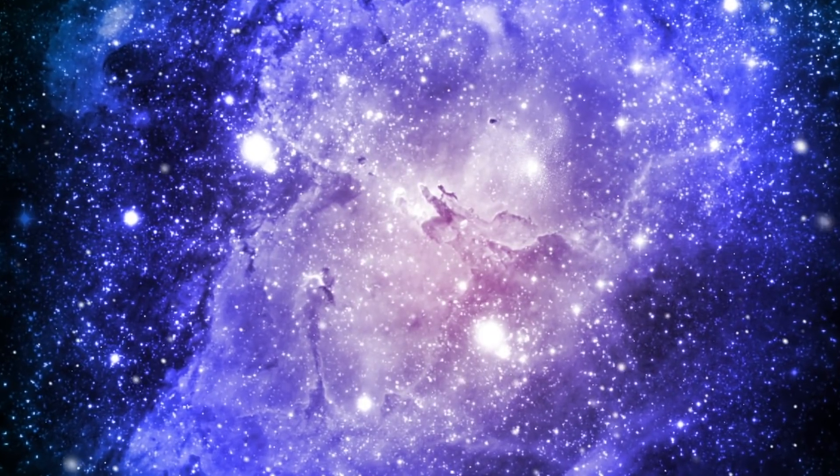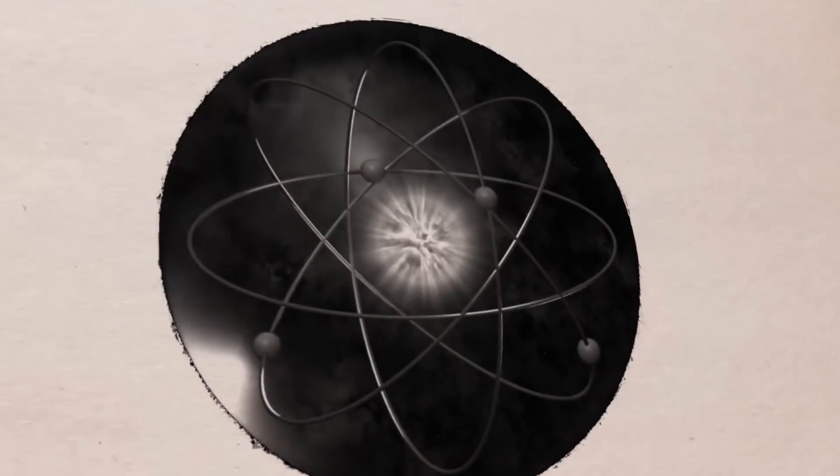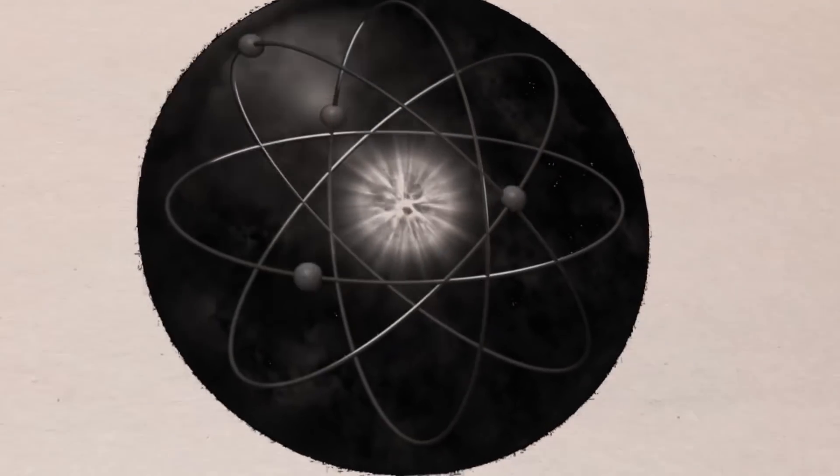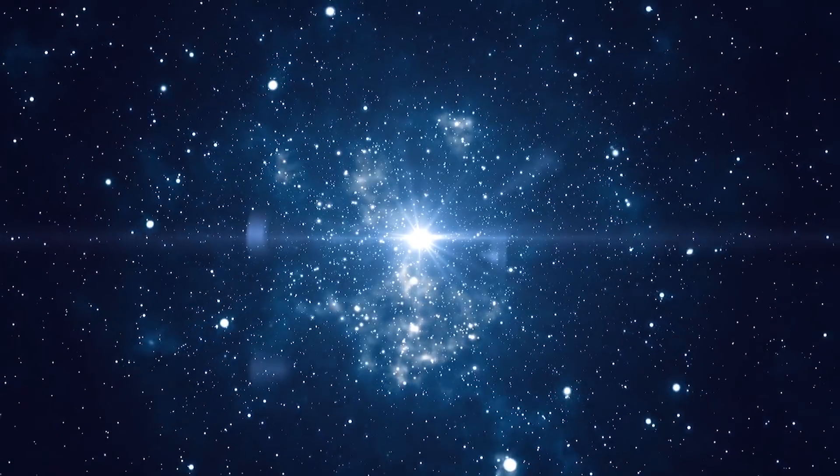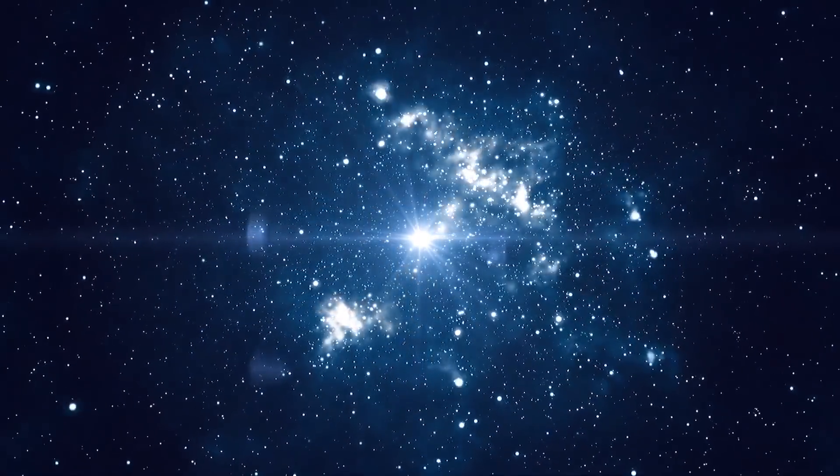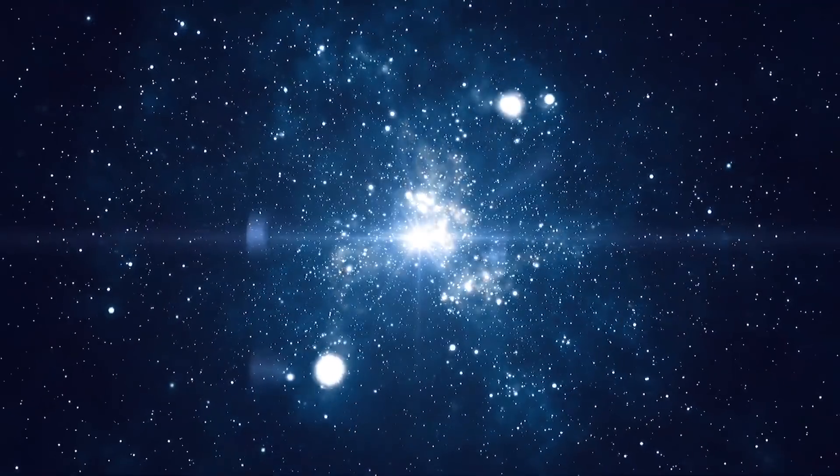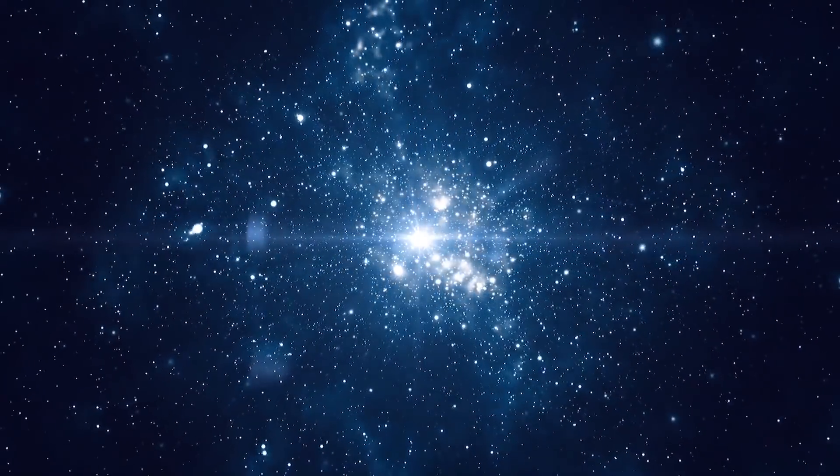As the energized electrons revert from their higher energy state to a lower energy state by recombining with the hydrogen nuclei, they emit energy in the form of light, causing the nebula's gas to glow, NASA explains.